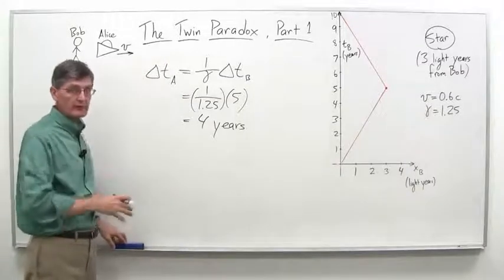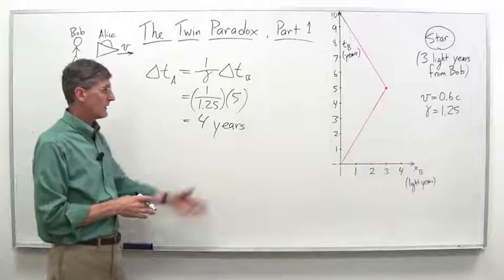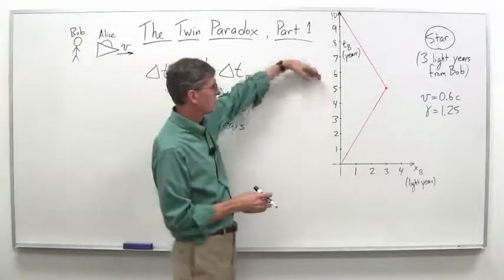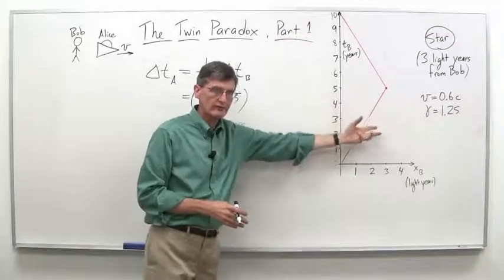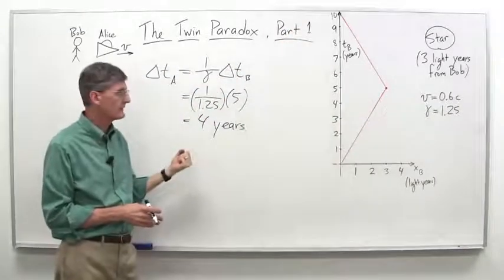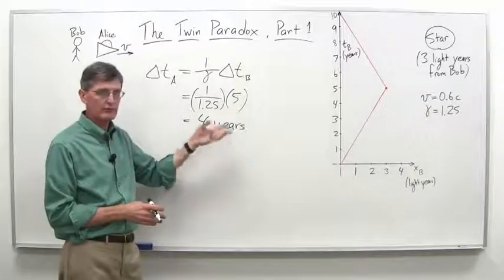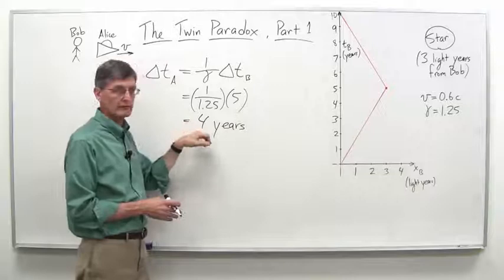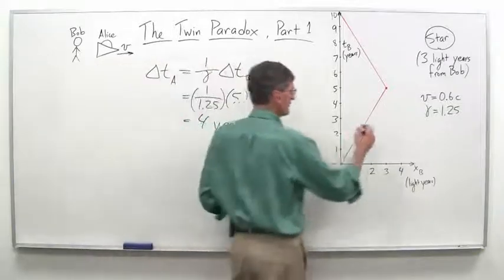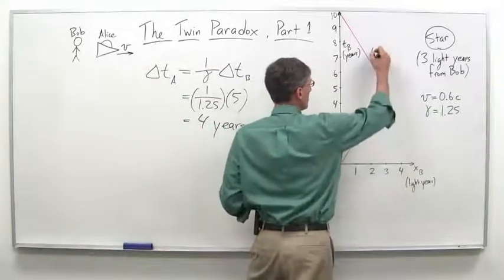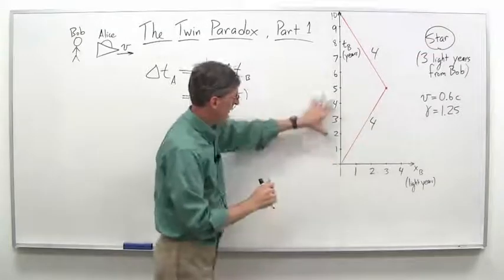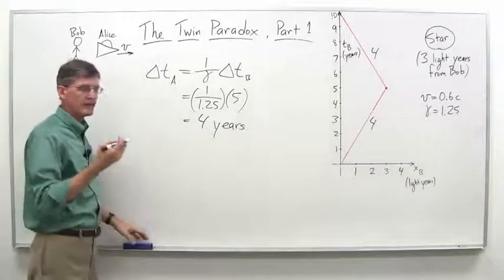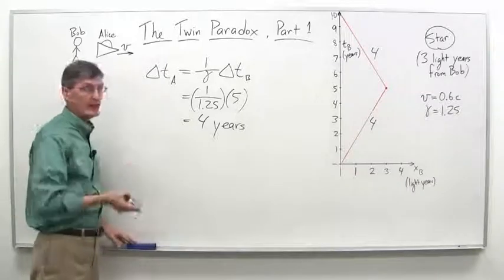And then on the return trip, same thing happens. Now she's coming back but still at a velocity of 0.6C. Bob will see his clocks tick off five years again because that's how long at 0.6C it takes to go three light-years back again. And at the same time, he will see Alice's clocks run more slowly than his, and so he'll see Alice's clock run for four years. So we'll have essentially four years for Alice here, another four years here. Meanwhile, Bob has five years and five years. So from Bob's perspective, it seems like Alice should come back having aged eight years while he has aged ten years.